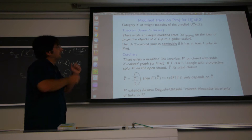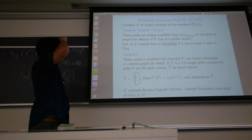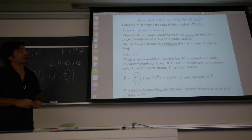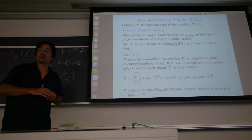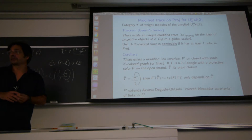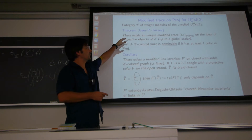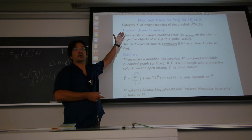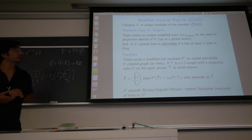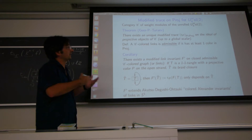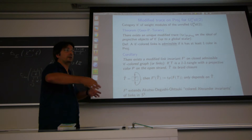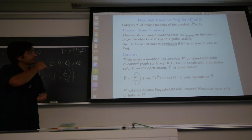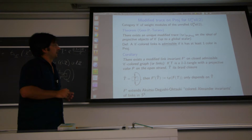We have this theorem for the category of weight representations of the unrolled quantum SL2: there exists on the ideal of projectives a unique modified trace up to a global scalar. So although the categorical trace is zero on morphisms of any projective, there exists a unique non-zero modified trace on it up to global scalar.